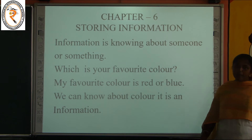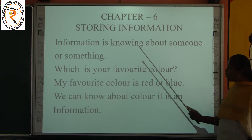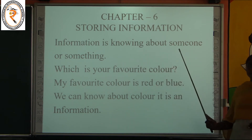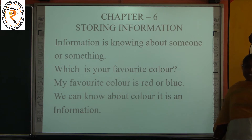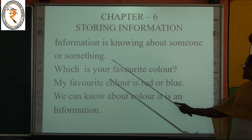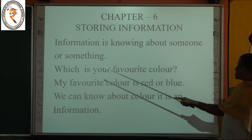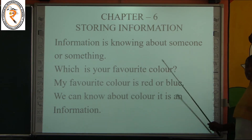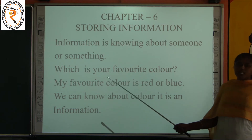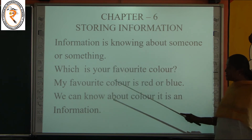Likewise in a word grid, if any word gets repeated it is a pattern. For example, the word 'apple' can be repeated four times, five times, or two times in a word grid — that is a pattern. So we have discussed about a word grid and we have to find a word in a word grid.